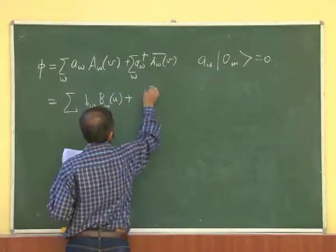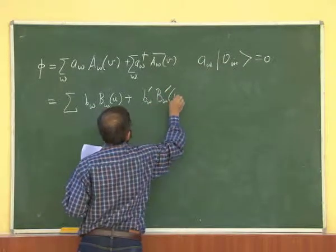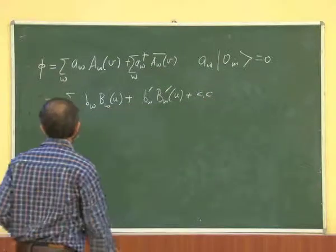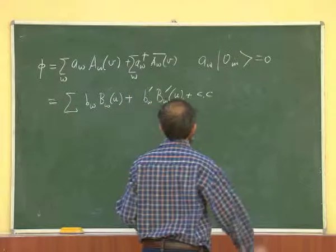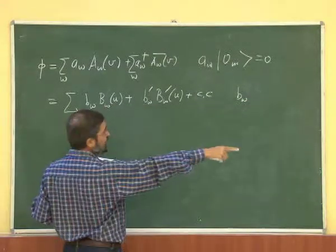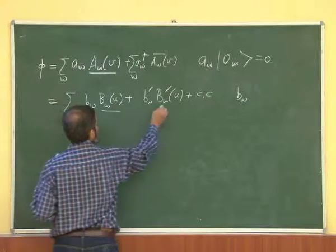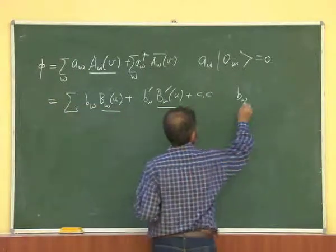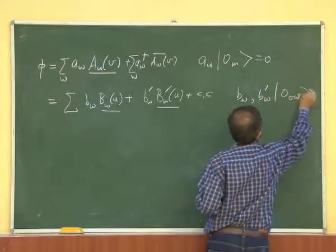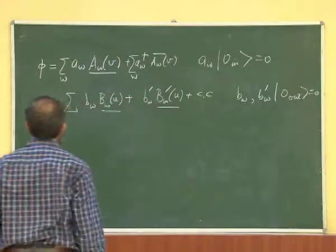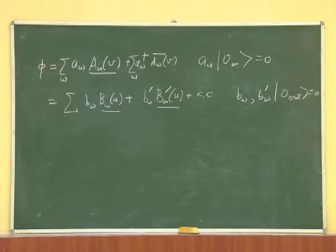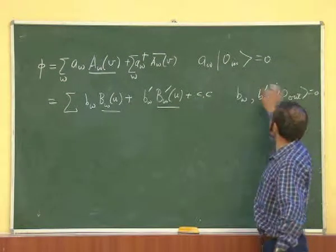There are these two kinds of modes and their complex conjugates that define the future vacuum — the outgoing modes. These modes define 0_out. Now let me take you through Hawking's derivation of the relation between these two vacua.